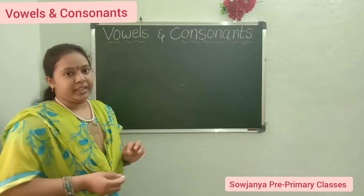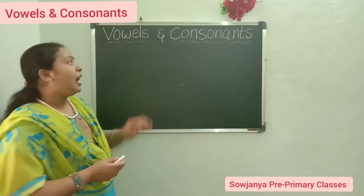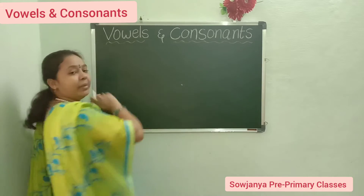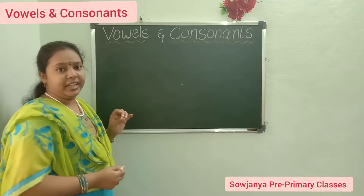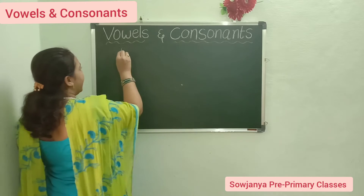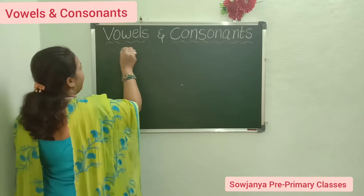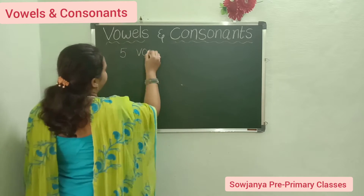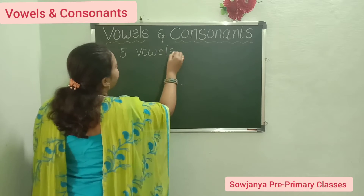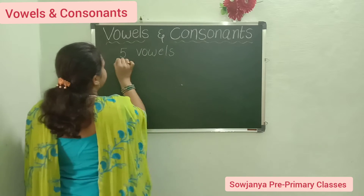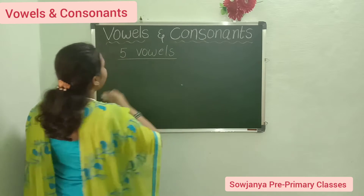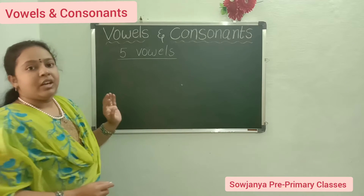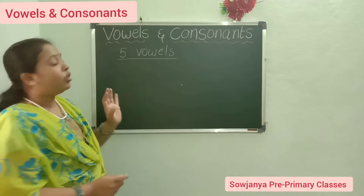Now we will go to the topic. Tell me, how many vowels are there? 5 vowels. How many vowels are there? 5 vowels. Now I will tell you the names of those 5 vowels.